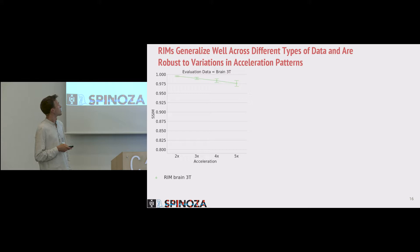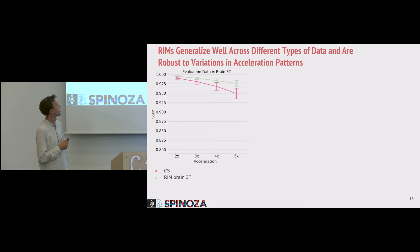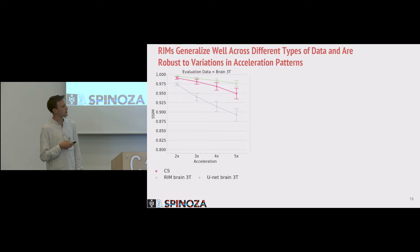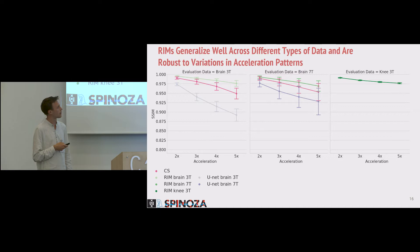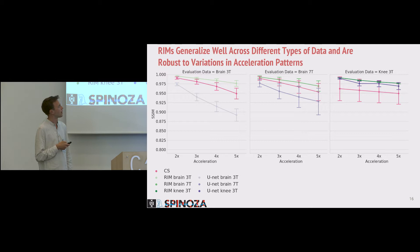Here we see our results starting with the RIM trained on T1-weighted brain images from the 3-Tesla scanner. Compared to compressed sensing, we are doing a bit better with a lower standard deviation, meaning it's more robust against differences in subsampling patterns and images. The U-Net is doing slightly better in their proposed paper, but we think it struggles because of the randomly generated subsampling patterns always being different. On the T2-star-weighted images, the same trend holds. For knee data, compressed sensing struggles, probably because the wavelet transform is more optimal for brains, but generally the RIM is also better on the knee dataset.